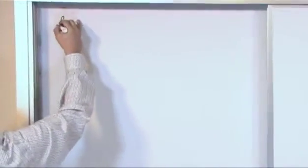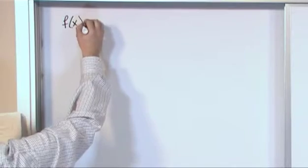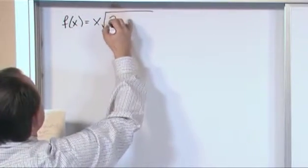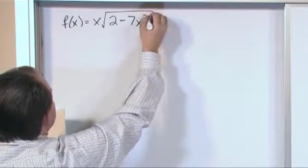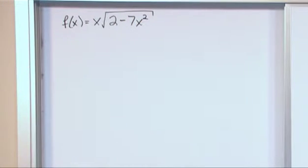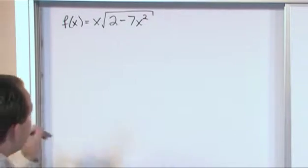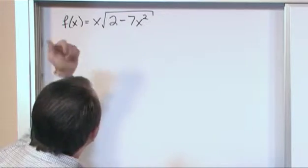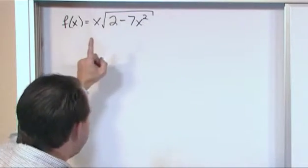So let's say we had a function f of x is equal to x times the square root of 2 minus 7x squared. Notice here that this is immediately more complicated for two reasons. One, we know we have a nesting going on because we have a square root function and inside of that guy is another function. So that's more complicated.